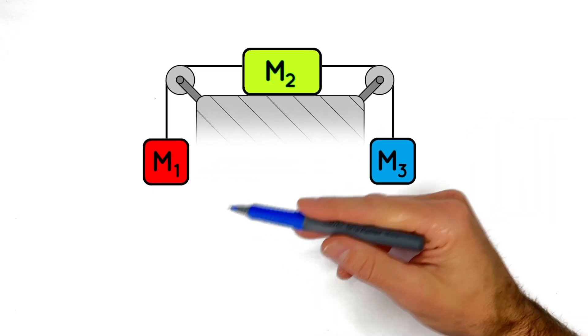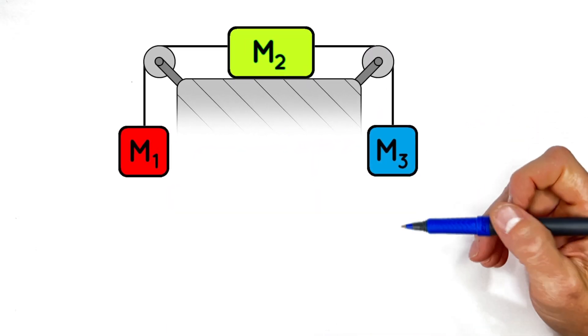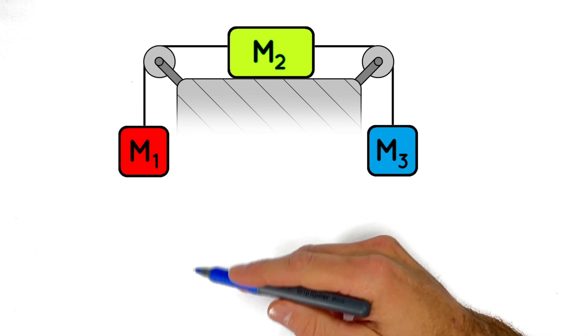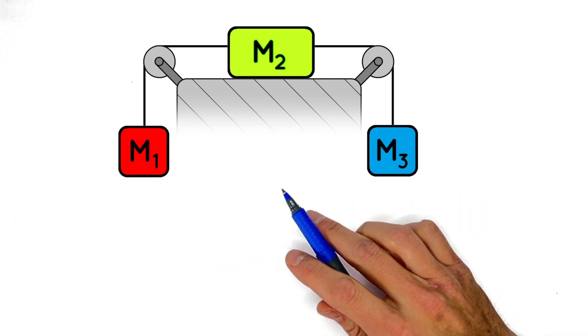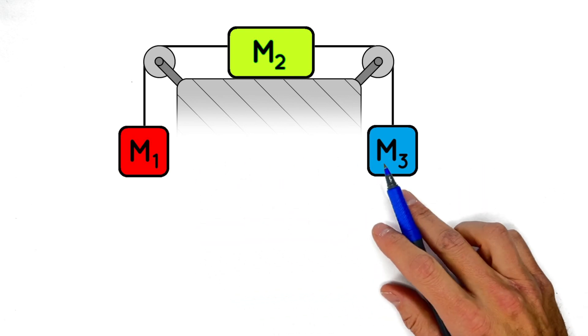So here's three blocks connected by a set of strings, and two of the blocks are hanging from the strings, while this middle block is sitting on a flat table between these two pulleys.